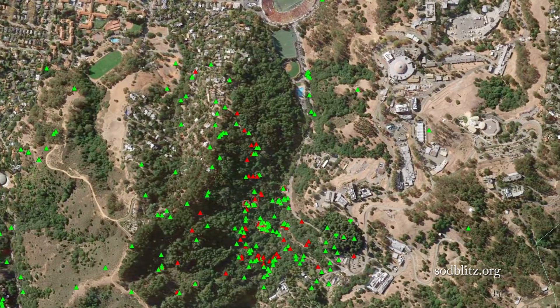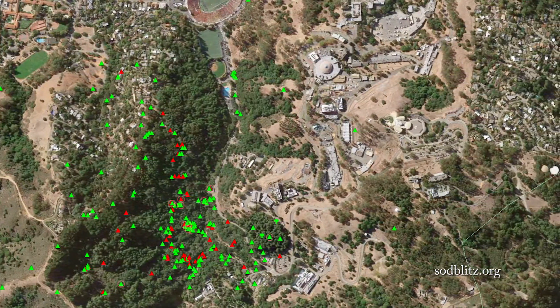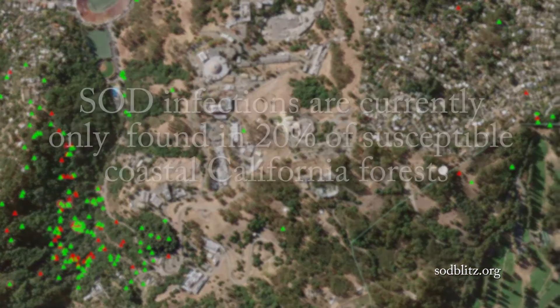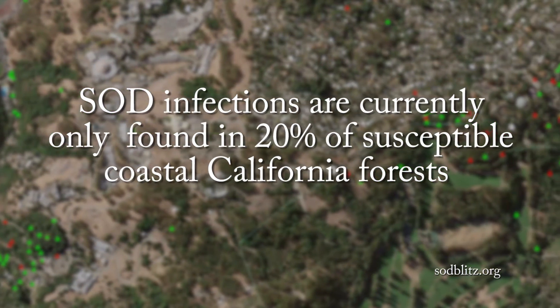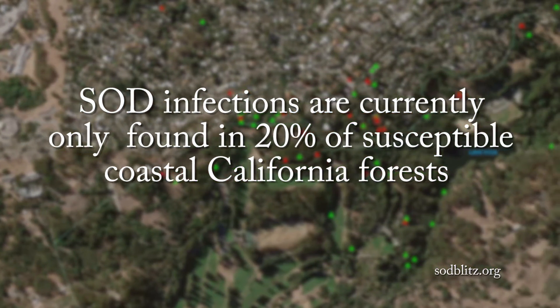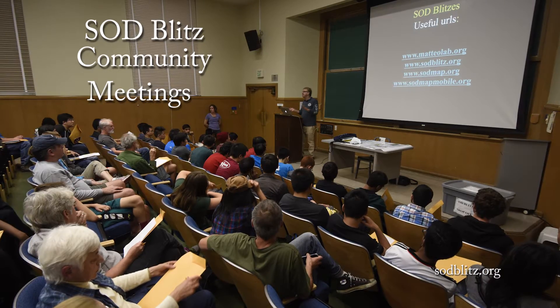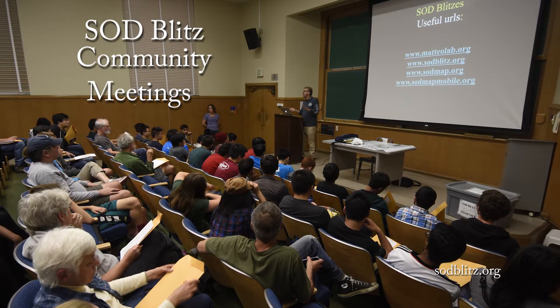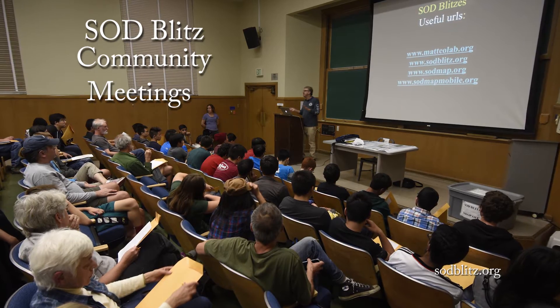The spread of the SOD pathogen is slower during dry years and much faster during wet years. Normally in one single year the pathogen will move just a few hundred yards or a couple of miles. So far only 20% of the coastal forests it could inhabit have been colonized. For this reason it's very important to monitor the presence of the pathogen to understand where it is and which trees may be at risk. The SOD blitzes are surveys to monitor the presence of the disease and to identify new infestations.